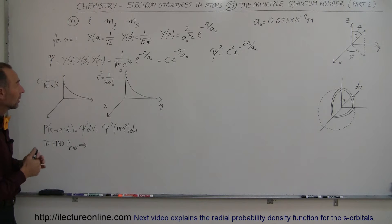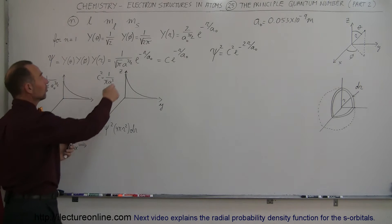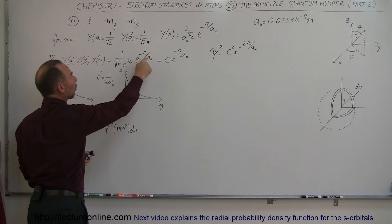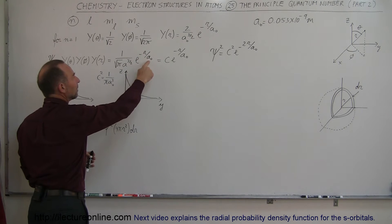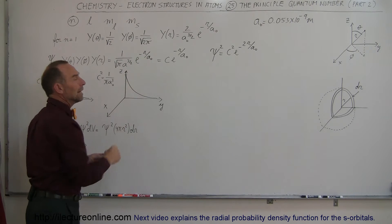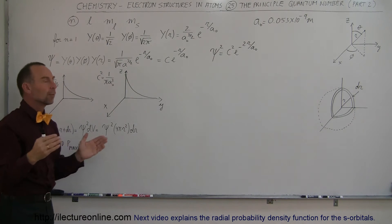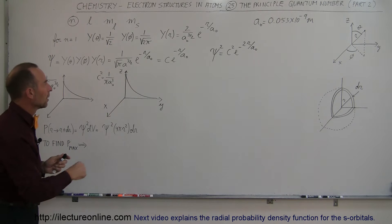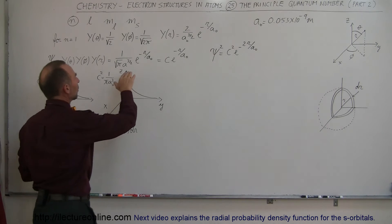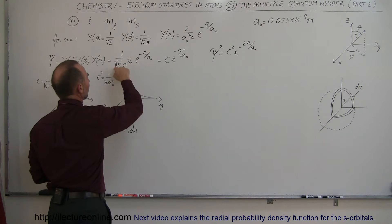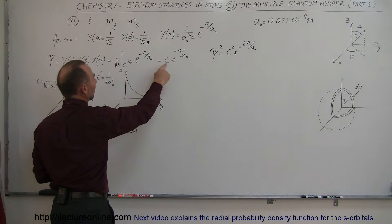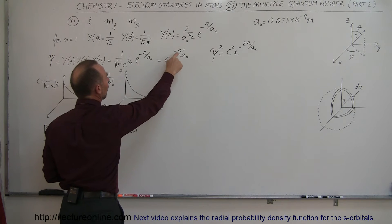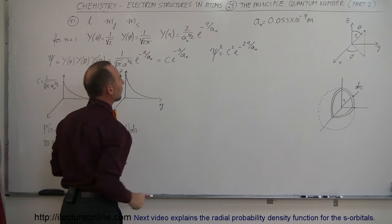What does the equation look like? Well, it's a constant times e to the minus r over the Bohr radius — the radius that we assume the electron to be. Since this is a constant, we can write this as a constant times e to the minus r over a sub-naught.